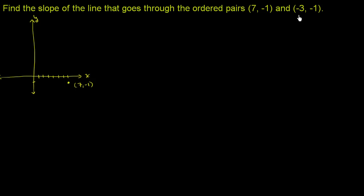And then the next point is negative 3 comma negative 1. So we go back 3 in the horizontal direction, negative 3. But the y-coordinate is still negative 1. It's still negative 1. So the line that connects these two points will look like this. It will look like that.